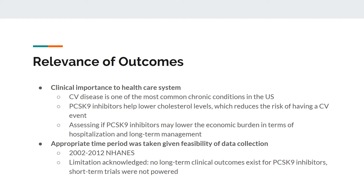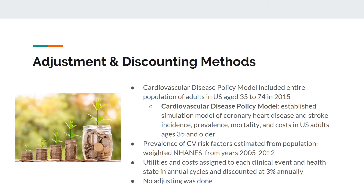Cardiovascular disease is one of the most common chronic conditions in the U.S. PCSK9 inhibitors help lower cholesterol levels, which reduces the risk of a CV event, and the outcomes from this study help assess whether PCSK9 inhibitors may lower the economic burden in terms of hospitalization and long-term management. The cardiovascular disease policy model included all U.S. adults aged 35 to 74 in 2015, and is an established simulation model of coronary heart disease and stroke incidence, prevalence, mortality, and cost in U.S. adults aged 35 and older. The prevalence of severe risk factors was estimated from population-weighted NHANES data from 2005 to 2012.